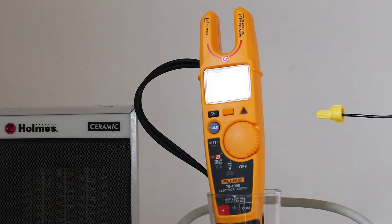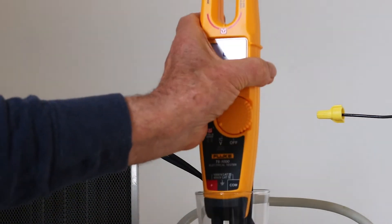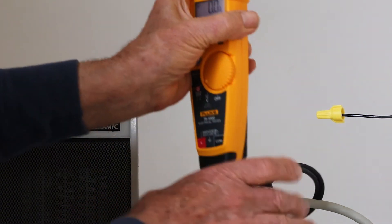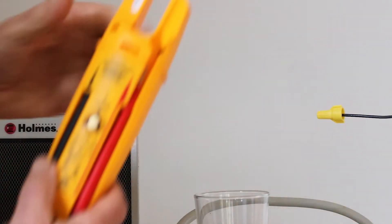The resistance mode has an audible continuity indicator. For non-contact voltage, current, and frequency measurements, the black lead has to be clipped firmly in place.